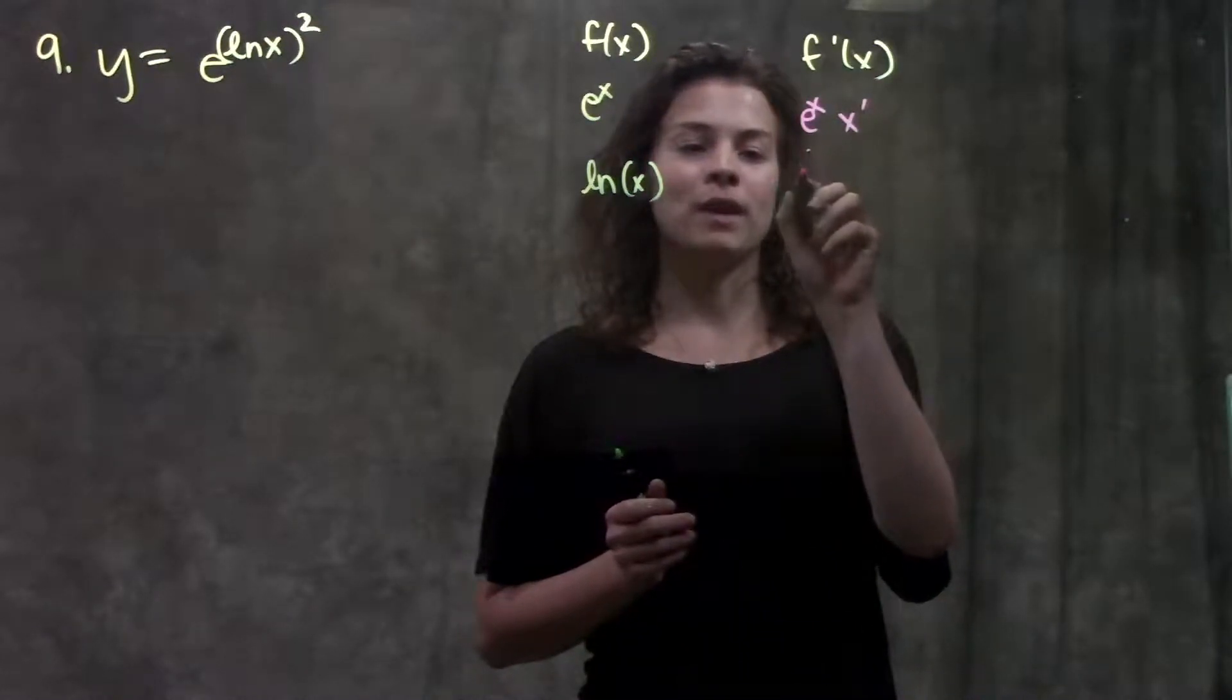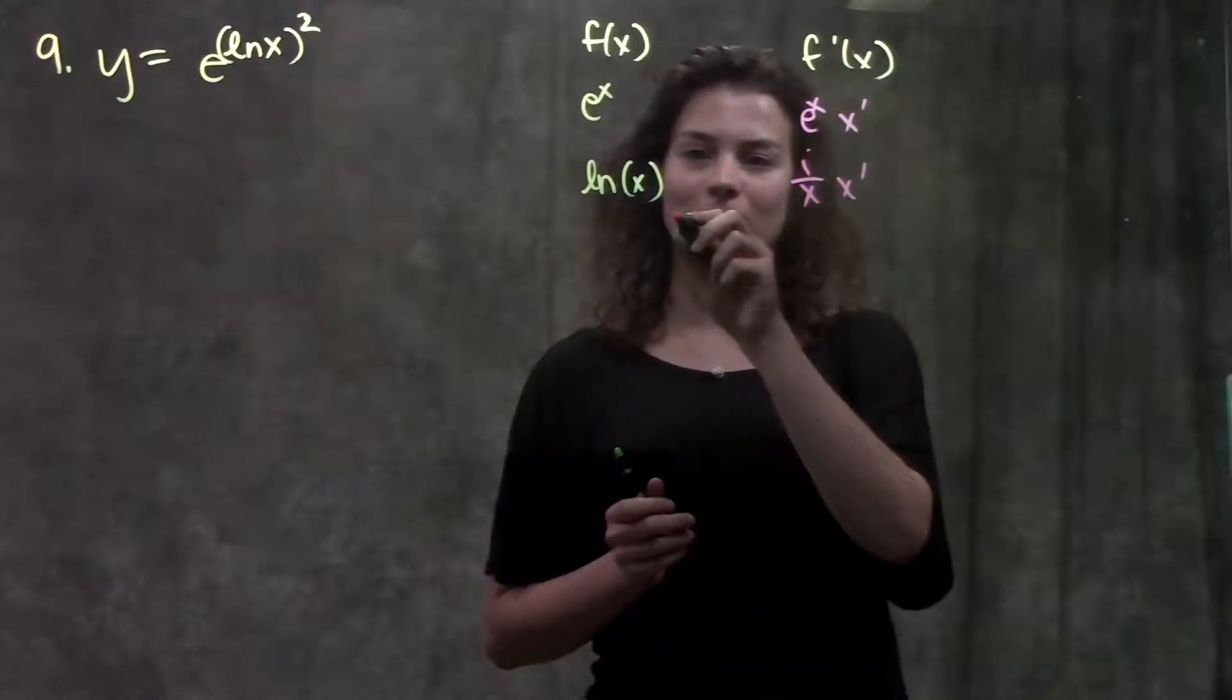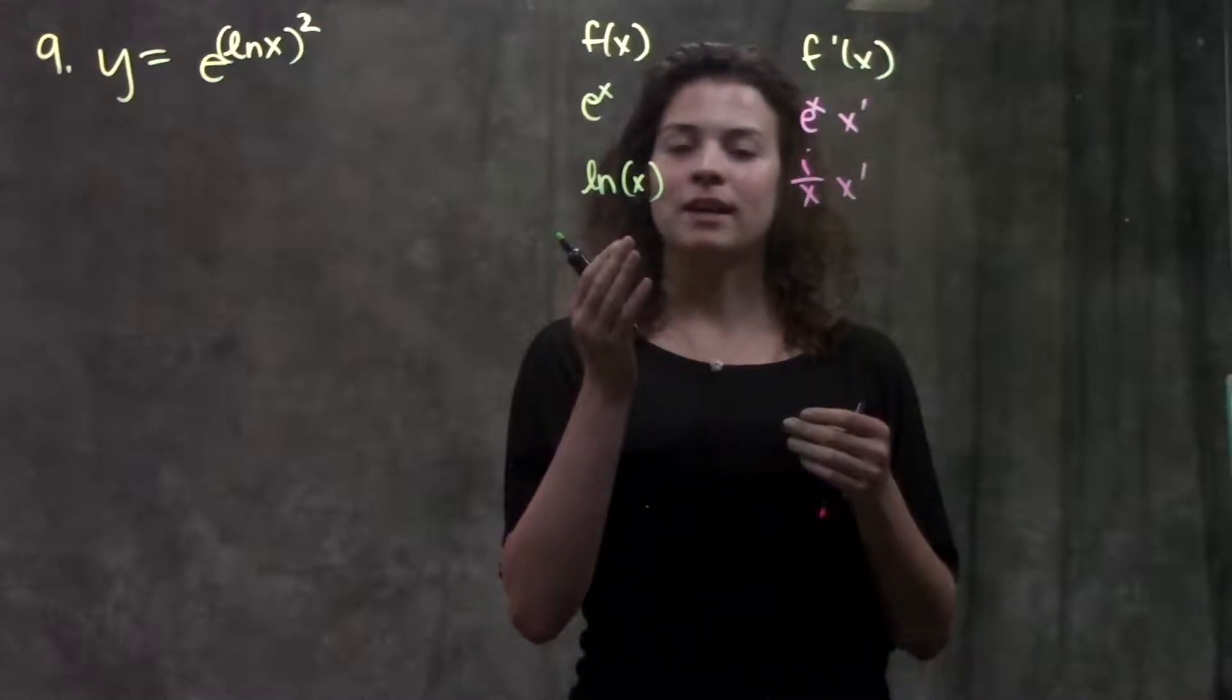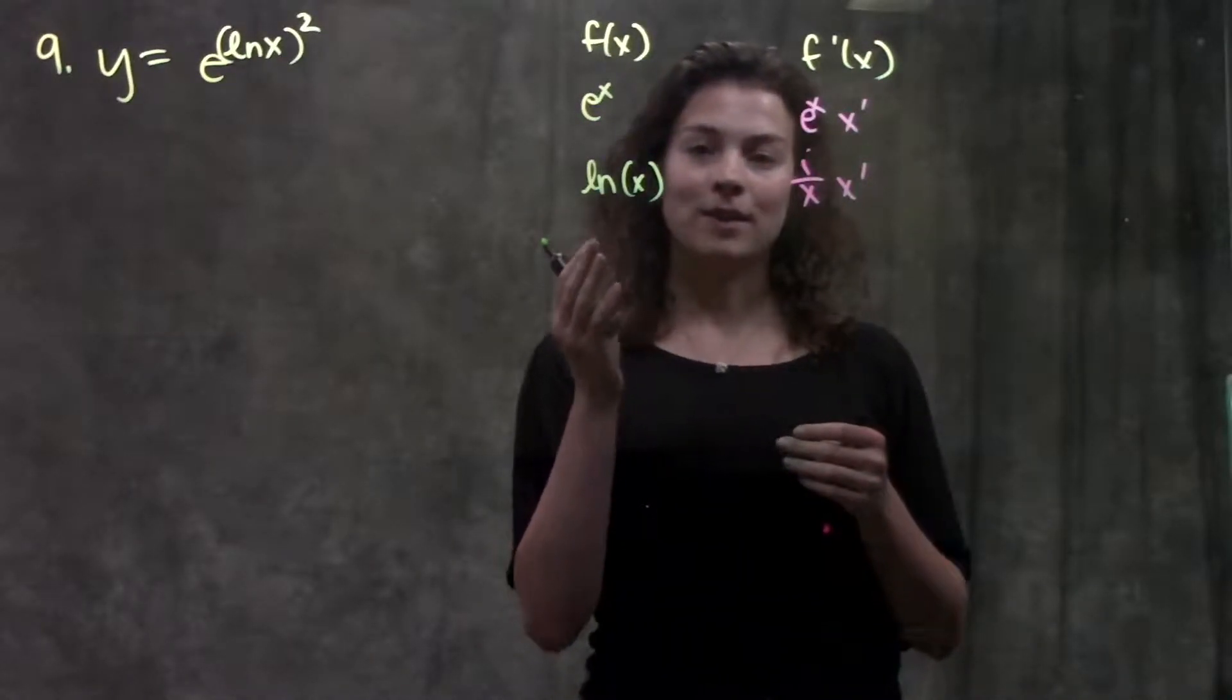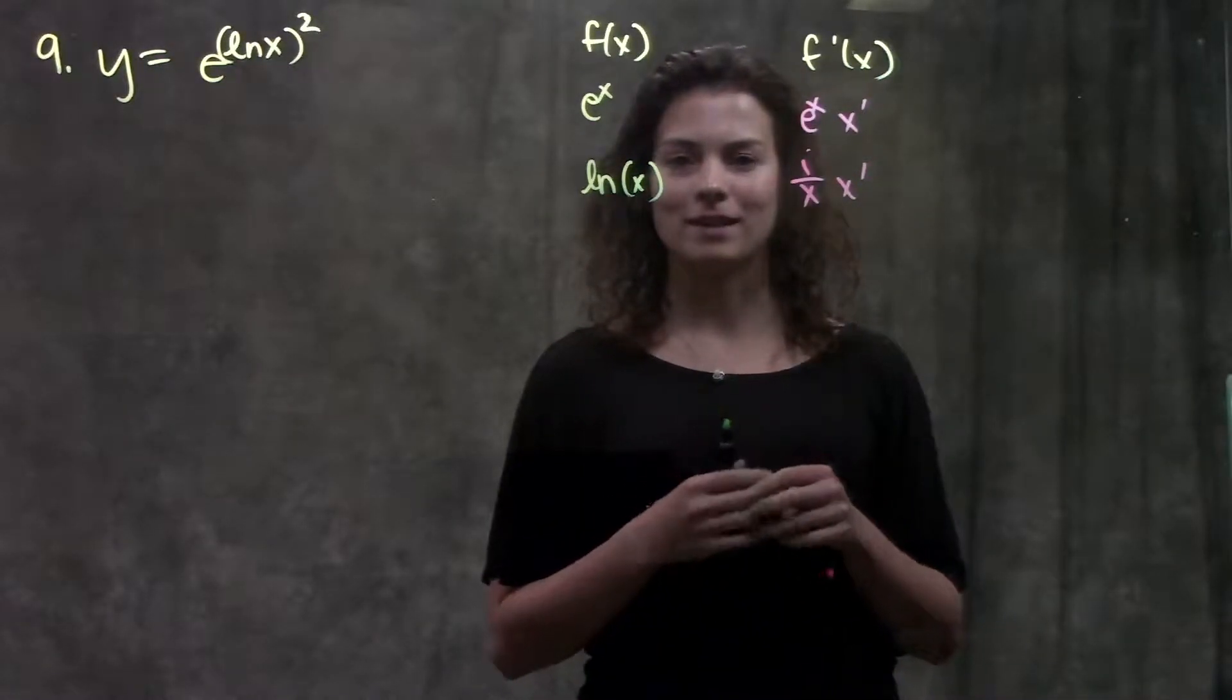For ln x, the derivative is 1 over x times x prime, again using chain rule. Again, it doesn't have to be just x inside here. It could be ln of something. The derivative of that is 1 over that something times the derivative of that something.